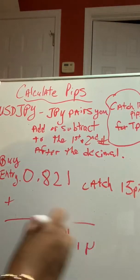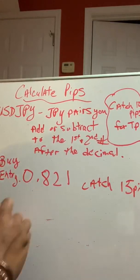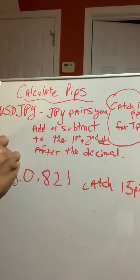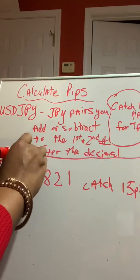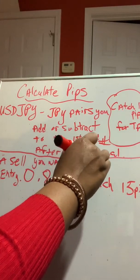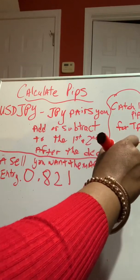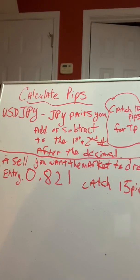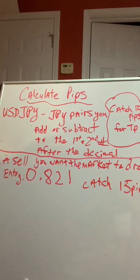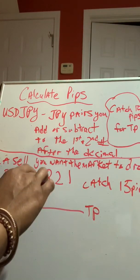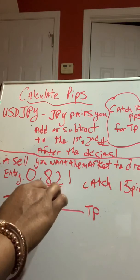So, let's say we want to catch 15 pips, but we're in a sale. Okay? In a sale, you want the market to drop. Okay? Excuse my chicken scratch. It is what it is. This is my quick lesson for today. Okay? In a sale, you want the market to drop. So, we want the market to go down. If we enter that 0.821, and we want to catch 15 pips going down, you subtract to get your TP. Okay? So, we're going to subtract from the first and second number after the decimal. Okay?